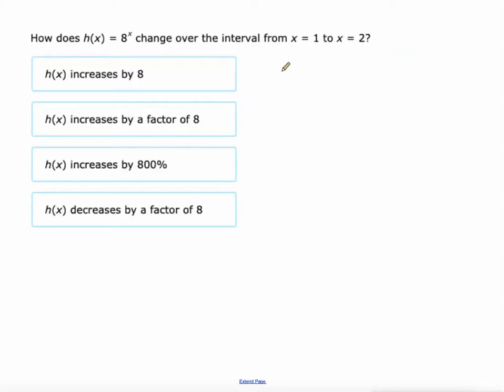So h of x is 8 to the power of x. How does it change from the interval of x equals 1 to x equals 2? So this increase of 1, that's what we call a unit interval. What happens to the function? Let's find out. h at 1 would be 8 to the first power, which is 8. And h at 2 would be 8 to the second power, which is 64.